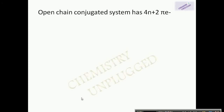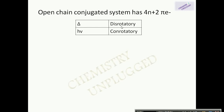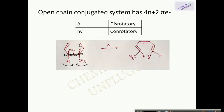When the open-chain conjugated system has 4n+2 pi electrons, thermally induced reactions proceed by disrotatory motion, and photochemically induced reactions proceed by conrotatory motion. For example, in cyclohexadiene the open-chain conjugated system has three pi bonds — six pi electrons — making it a 4n+2 pi electron system. So when thermally induced, the sigma bond breaks by disrotatory movement.